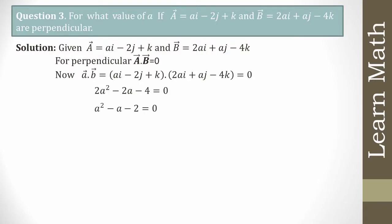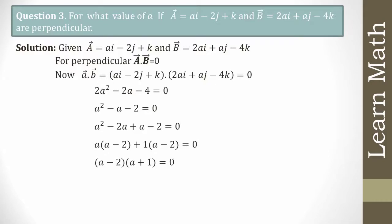Dividing both sides by 2: a² - a - 2 = 0. Factorizing: (a - 2)(a + 1) = 0, so a - 2 = 0 or a + 1 = 0. Therefore a = 2 or a = -1.